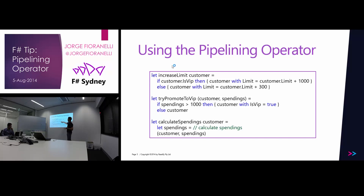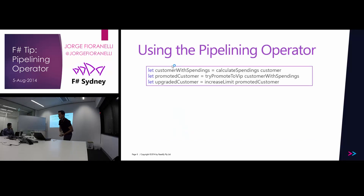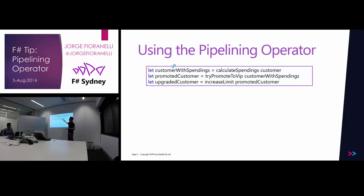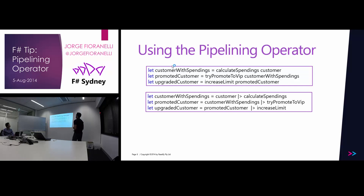Now that we have how much the customer has spent, the possibility of promoting the customer to VIP, and the function to increase the limit, we could call these three functions in this way — similar to how you would do it in C#. You call calculate_spendings with the customer, get the tuple, then call try_promote_to_VIP with that tuple, get a potentially promoted customer, and finally call increase_limit on that customer to get a customer with an increased limit.